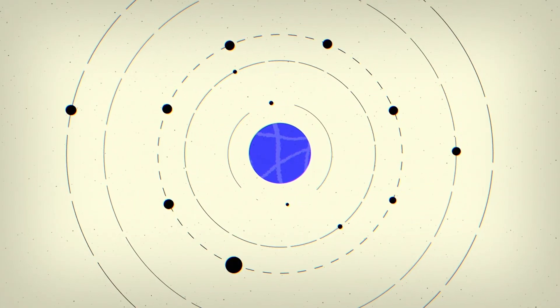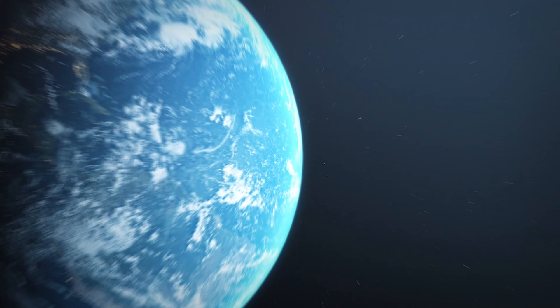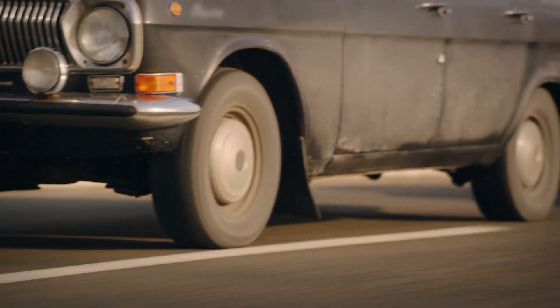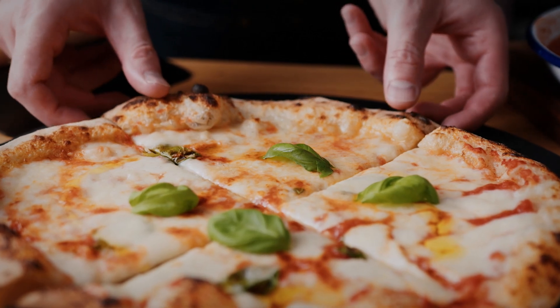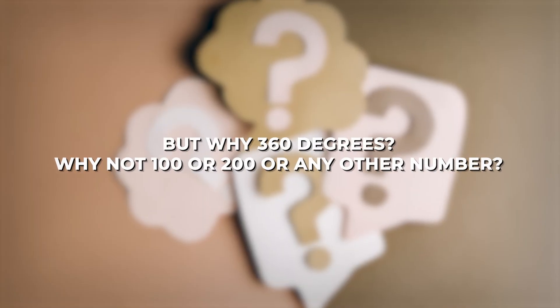Circles are fundamental to our understanding of the universe. They're in the orbits of planets, the wheels on your car, the clock on your wall, and even the pizza you had for dinner last night. But why 360 degrees? Why not 100 or 200 or any other number?